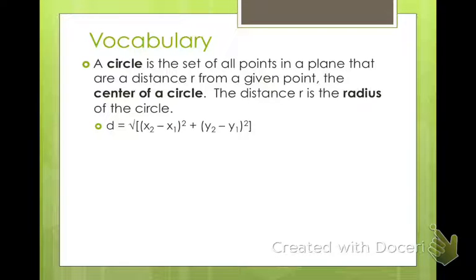We can use the distance formula: the square root of (x₂ - x₁)² + (y₂ - y₁)². If you subtract those, square them, add them together, and then square root that, that will give you the distance from one point to another point. That applies for finding the distance from a point on the circle to the radius of the circle.